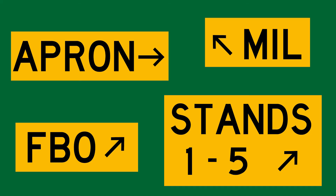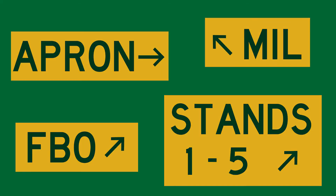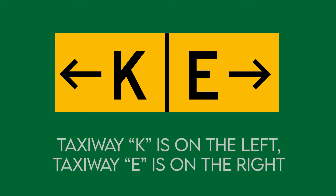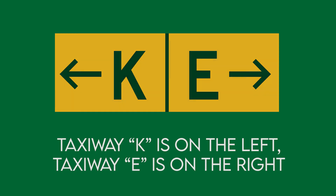An abbreviation may be used as the text on the sign for some destinations. When two or more destinations share a common taxiing route, they are separated by a dot and one arrow is used. When two or more destinations have different taxiing routes, each destination will be accompanied by its own arrow and separated from the others by a vertical black message divider.